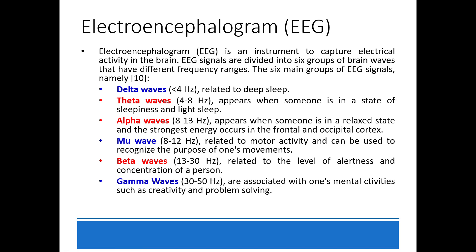EEG is an instrument to capture electrical activity in the brain. EEG signals are divided into 6 groups of brain waves that have different frequency ranges. The 6 main groups of EEG signals are: delta wave, theta wave, alpha wave, mu wave, beta wave, and gamma wave.